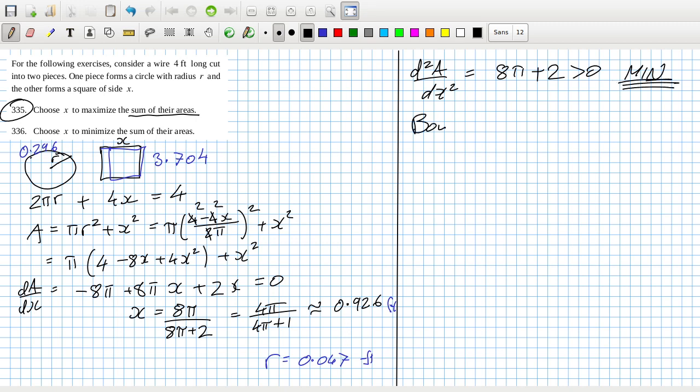Yeah, so now we have to check the boundary. The boundary is x is zero or one. So you could have x is zero for the biggest circle. When x is zero, the area will be πr² where all four feet go to the circle.